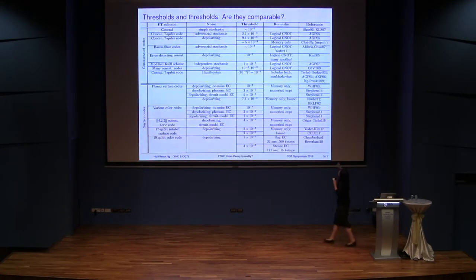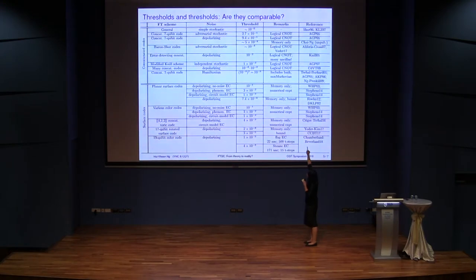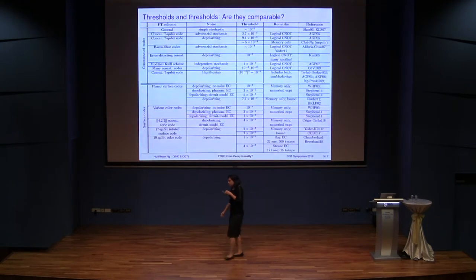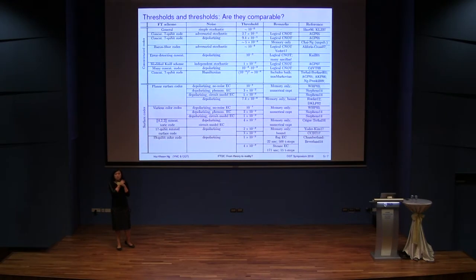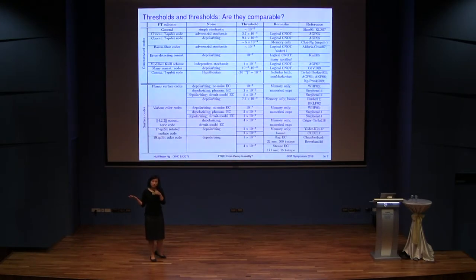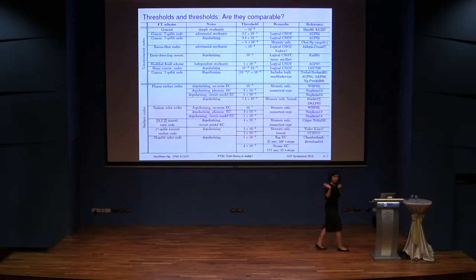Another difference: for concatenated codes, the calculations include doing actual logical gates — specifically logical CNOT, typically the worst element in computation. For surface codes, the only calculations people have ever done are for memory only — no logical operations, just storage. So there is yet another difference in what is actually being computed in these threshold studies.